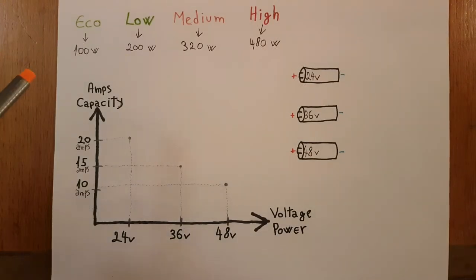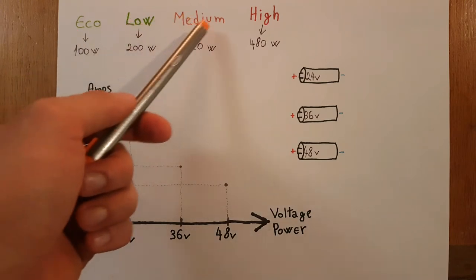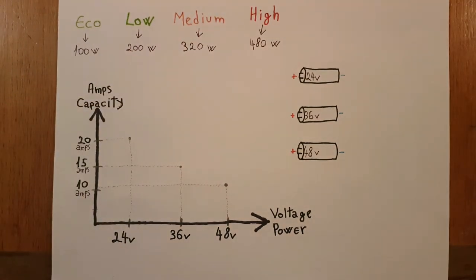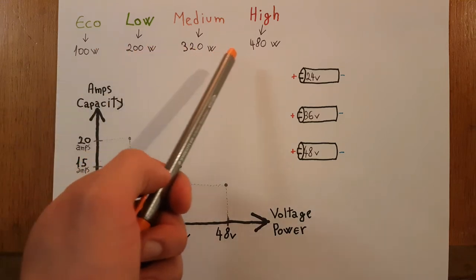As I showed in a previous video, e-bikes have different levels of pedal assist like eco, low, medium, and high. Behind these words, the controller will take different amounts of watt-hours from the battery to assist you.